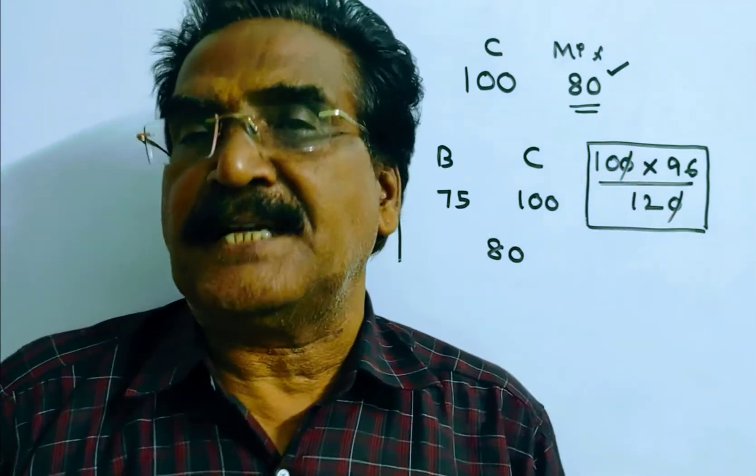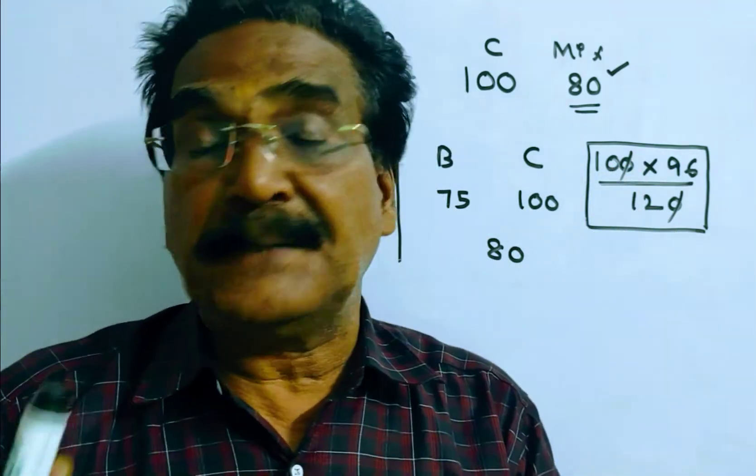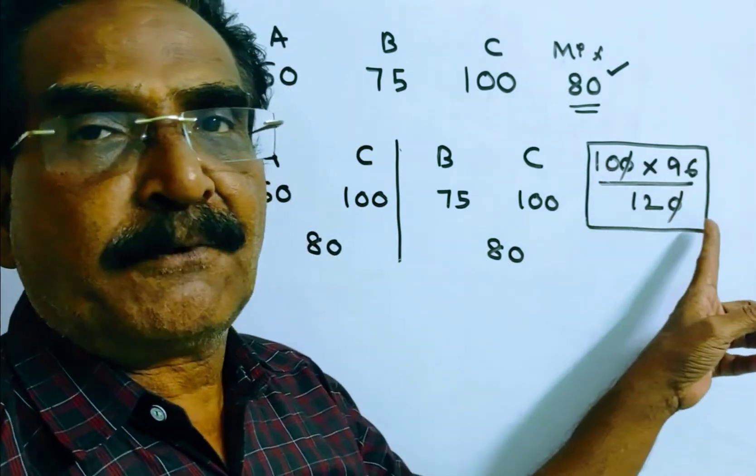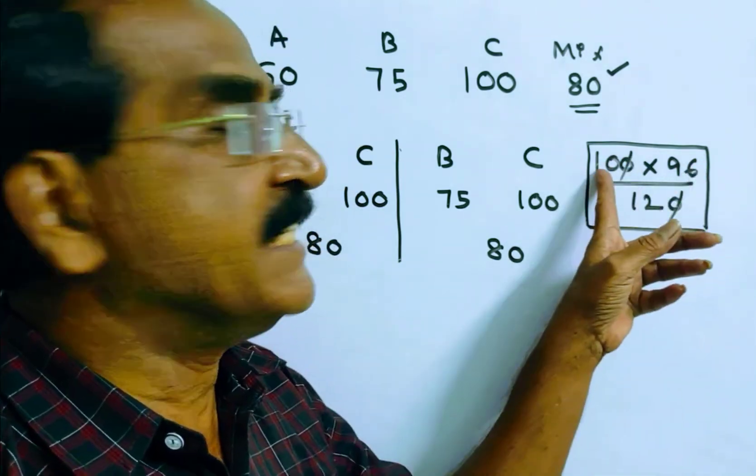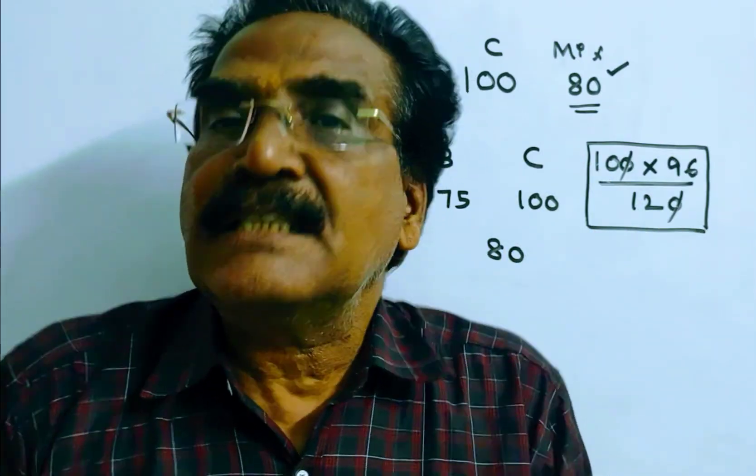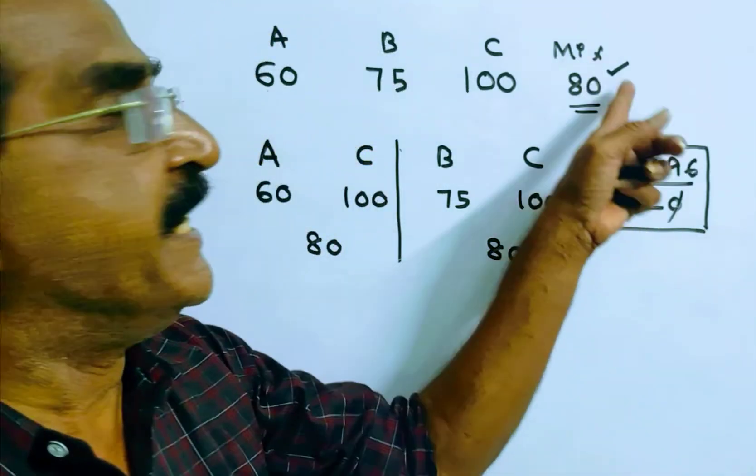Let us find the cost price of the mixture, that is the worth price of the mixture. 100 into sold price by 100 plus profit. Zero, zero cancel, 12, 8, 8, 10, 80. So the cost price of the mixture, that is the worth price of the mixture, is rupees 80.